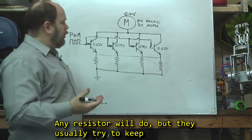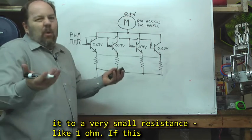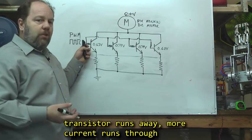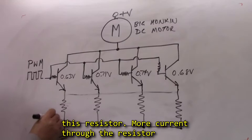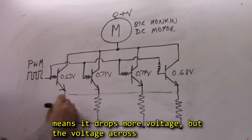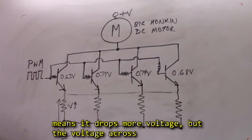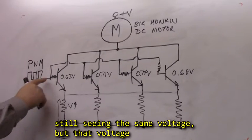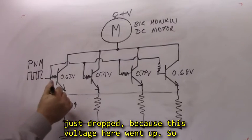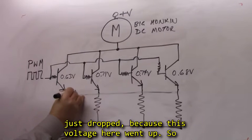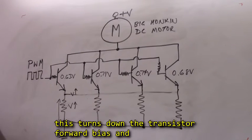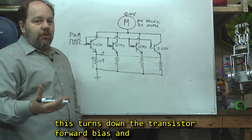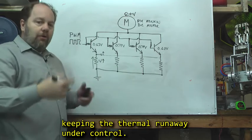Now I knew a resistor will do, but they usually try to keep it to a very small resistance, like 1 ohm. If this transistor runs away, more current runs through this resistor, more current through the resistor means it drops more voltage, but the voltage across the base emitter junction has just gone down. The base is still seeing the same voltage, but that voltage just dropped because this voltage here just went up. So this turns down the transistor's forward bias, keeping that thermal runaway under control.